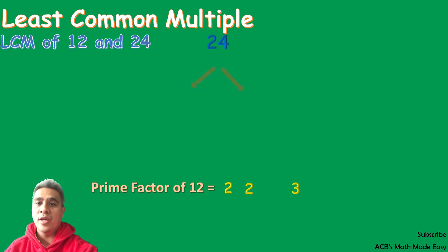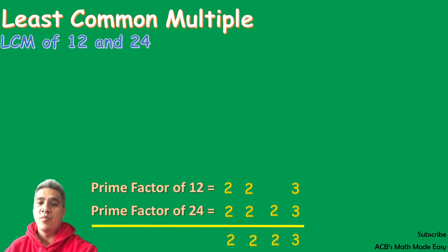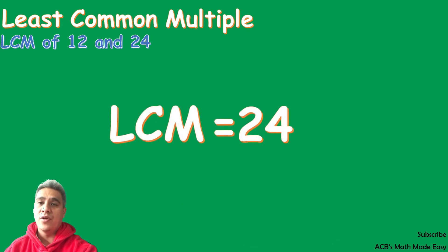Now we're going to factor out 24. 24 can be factored out by 3 times 8. 8 can be factored out by 2 times 4, and 4 can be factored out by 2 times 2. So the prime factors of 24 are 2, 2, 2, and 3. We can now bring all the factors down. The next step is to multiply them all: 2 times 2 times 2 times 3 is equal to 24. So the least common multiple of 12 and 24 is 24.